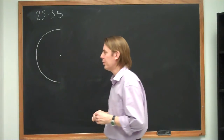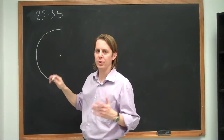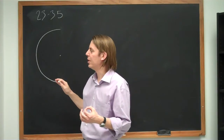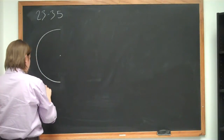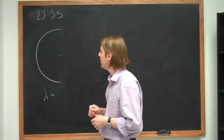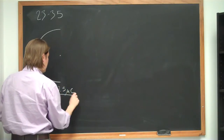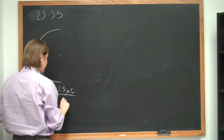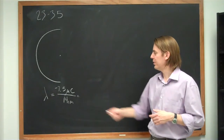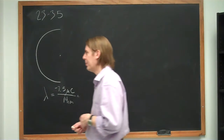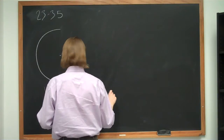To start this problem, ask what do we know and what can we calculate. We have a charge distributed along a rod — a one-dimensional charged object — so we deal with a linear charge density lambda, charge per length. We can calculate lambda right away: it's the total charge divided by the total length. The total charge is minus 7.5 microcoulombs and the total length is 14 centimeters, giving lambda equals minus 5.36 times 10 to the minus 5 coulombs per meter in MKS units.